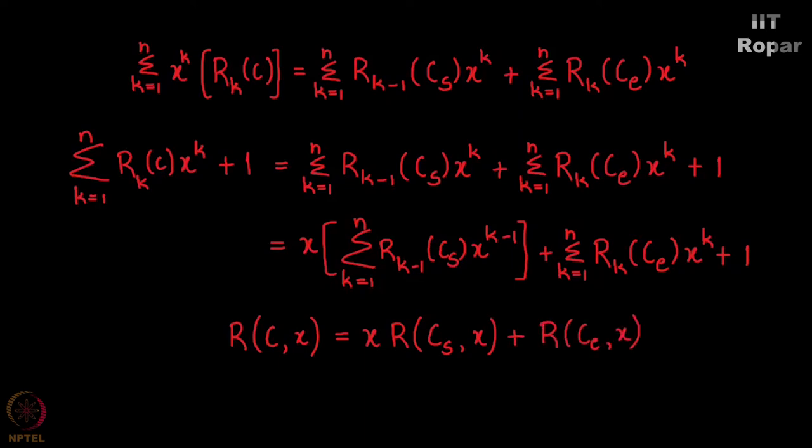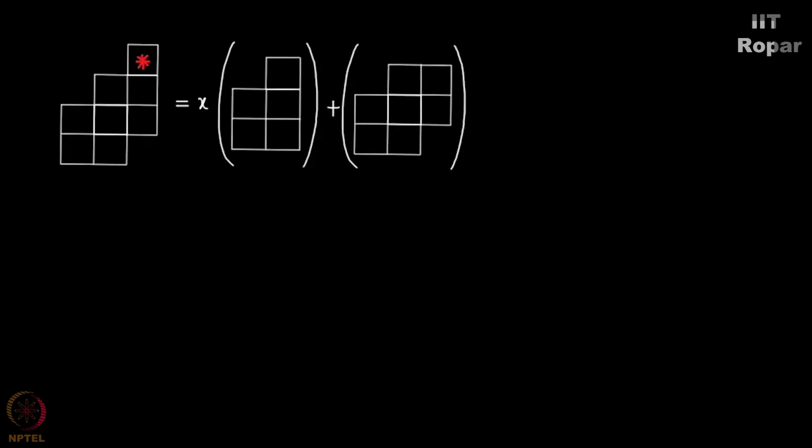Now what did we just do? What we did is actually magical. You see we took a bigger chessboard and we asked this question: what is the rook polynomial of the bigger chessboard? And we got that the rook polynomial of the bigger chessboard is X times the rook polynomial of a slightly lesser chessboard plus another smaller chessboard, which means we can recursively keep applying this and then make the question smaller and smaller and finally get the answer. We will precisely do that.